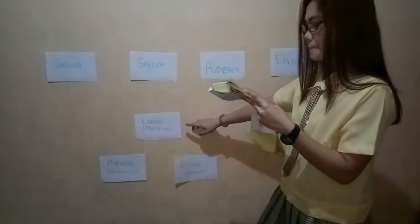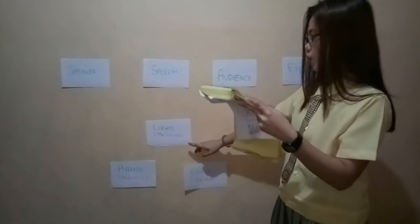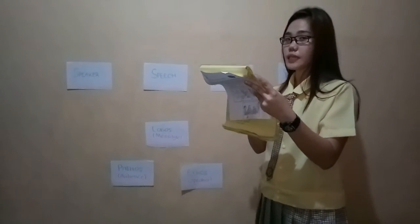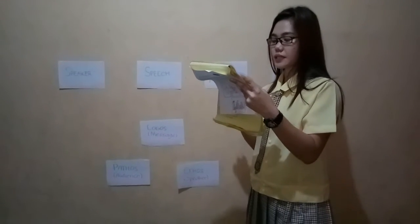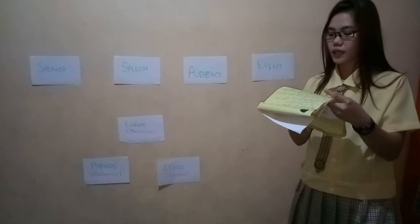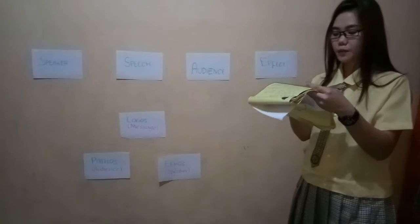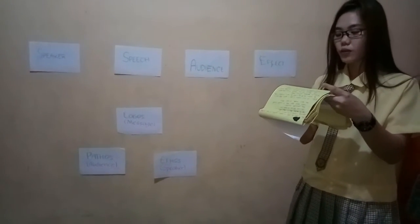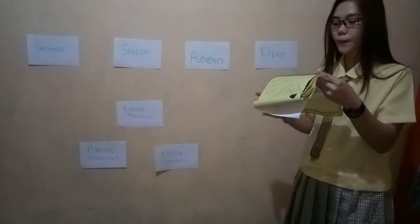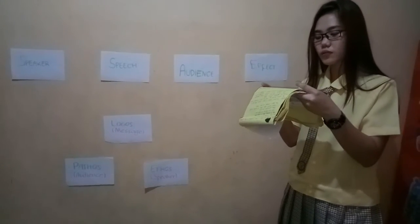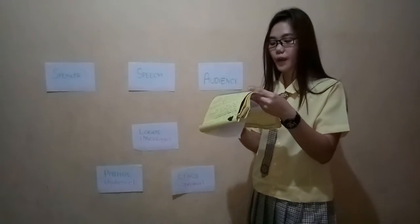The second element is logos, or message. The direct translation of logos is logic. In rhetoric, it refers more broadly to the speaker's speech — specifically the facts, statements, and other elements that comprise the argument. According to Aristotle's model of communication, logos is the most important part of one's argument. The appeal to logic also means that paragraphs and arguments must be properly ordered.